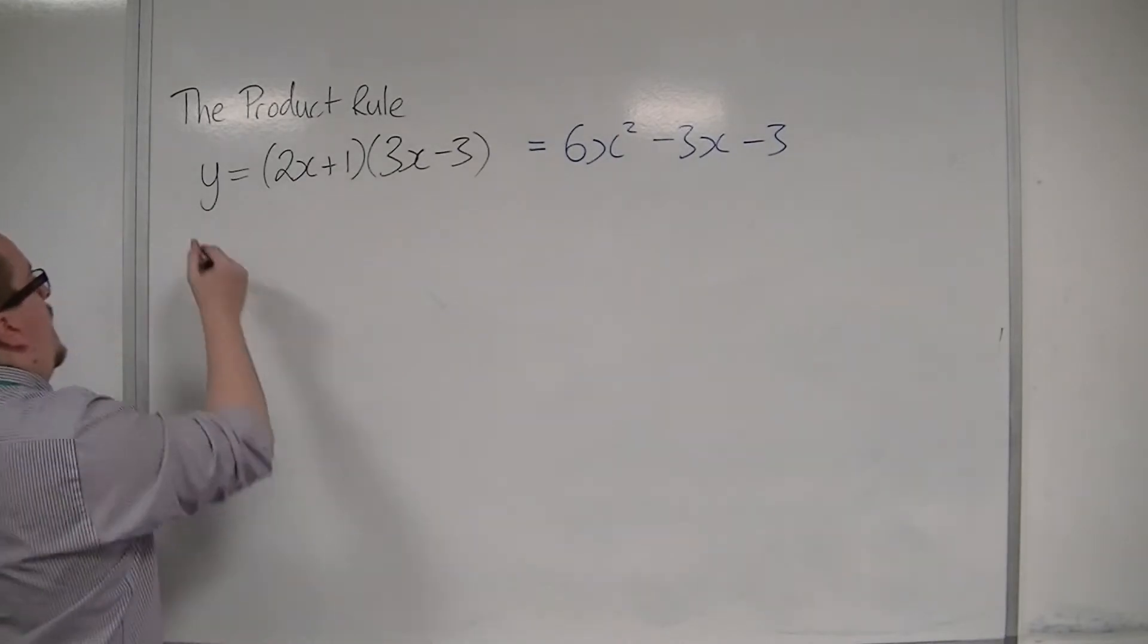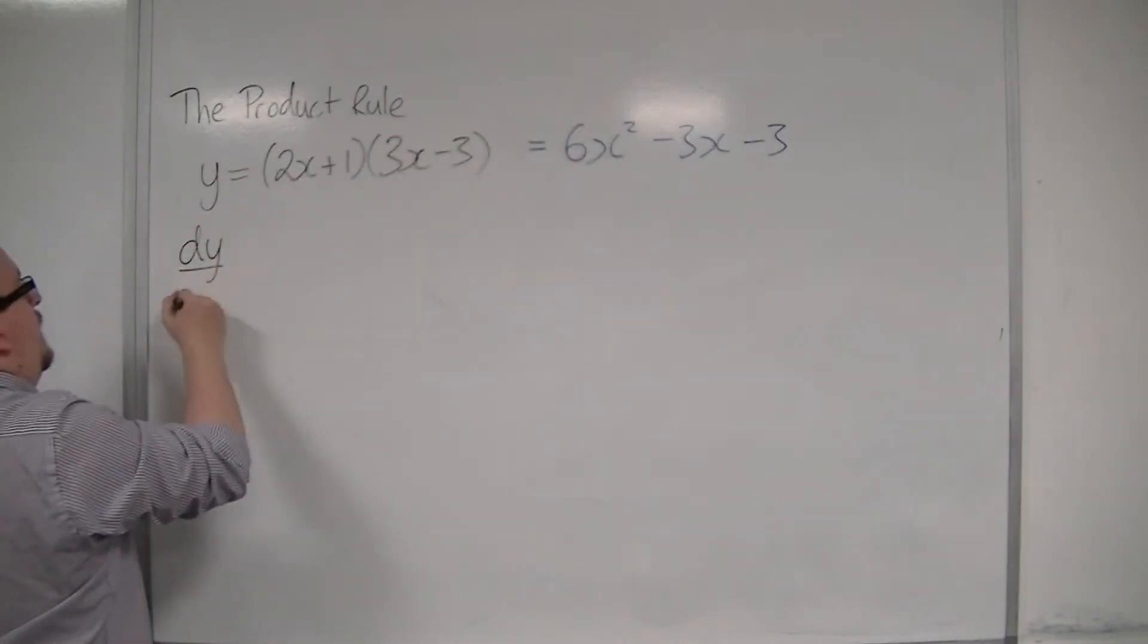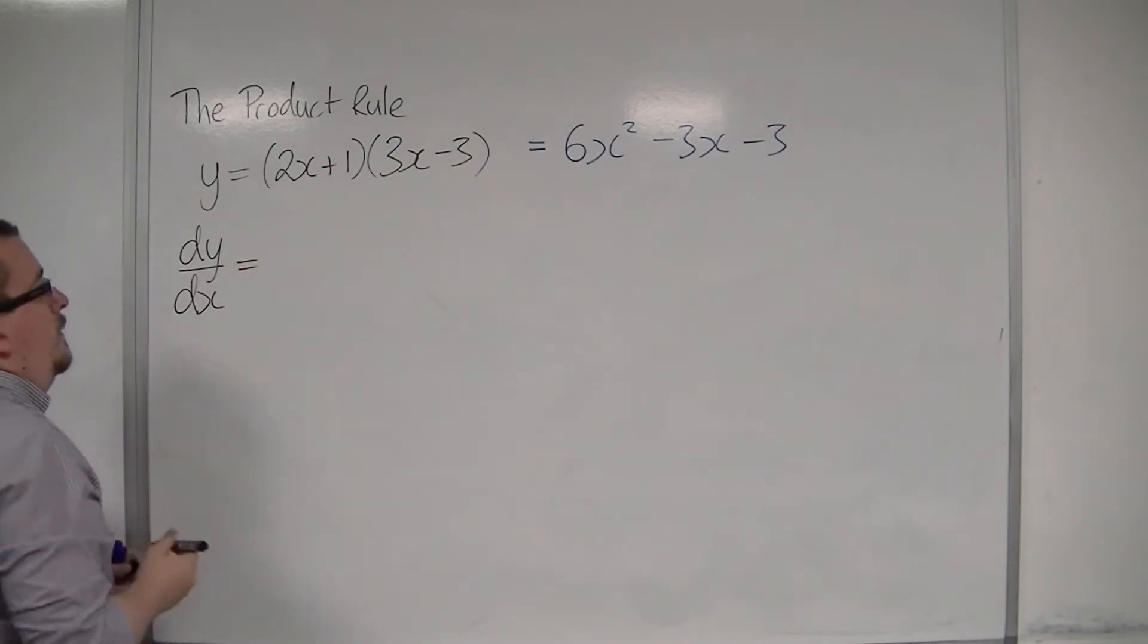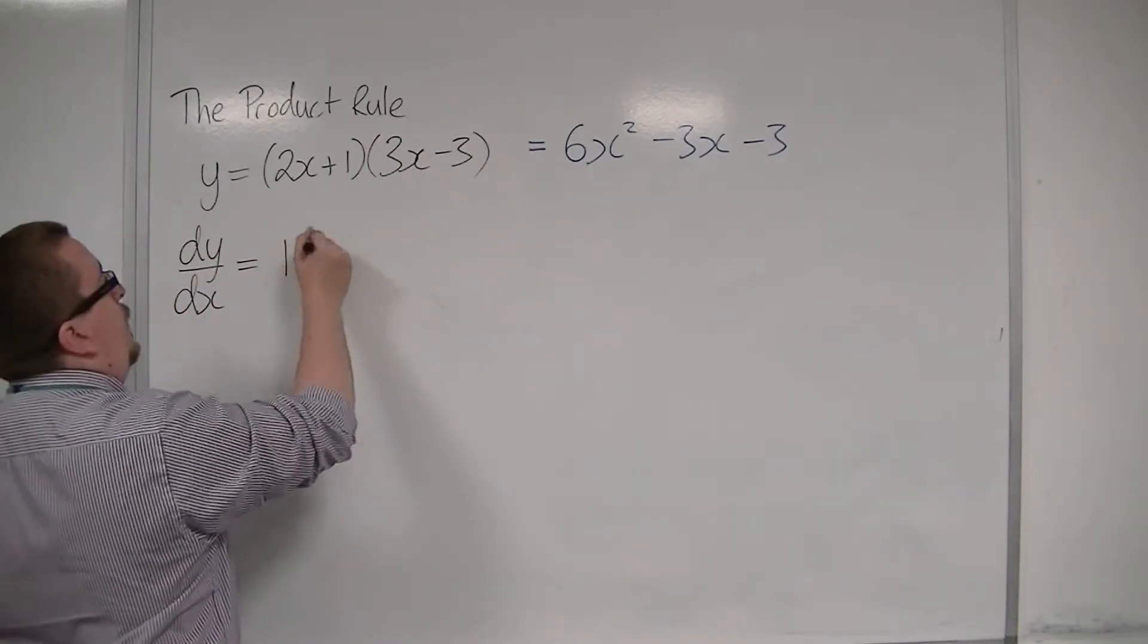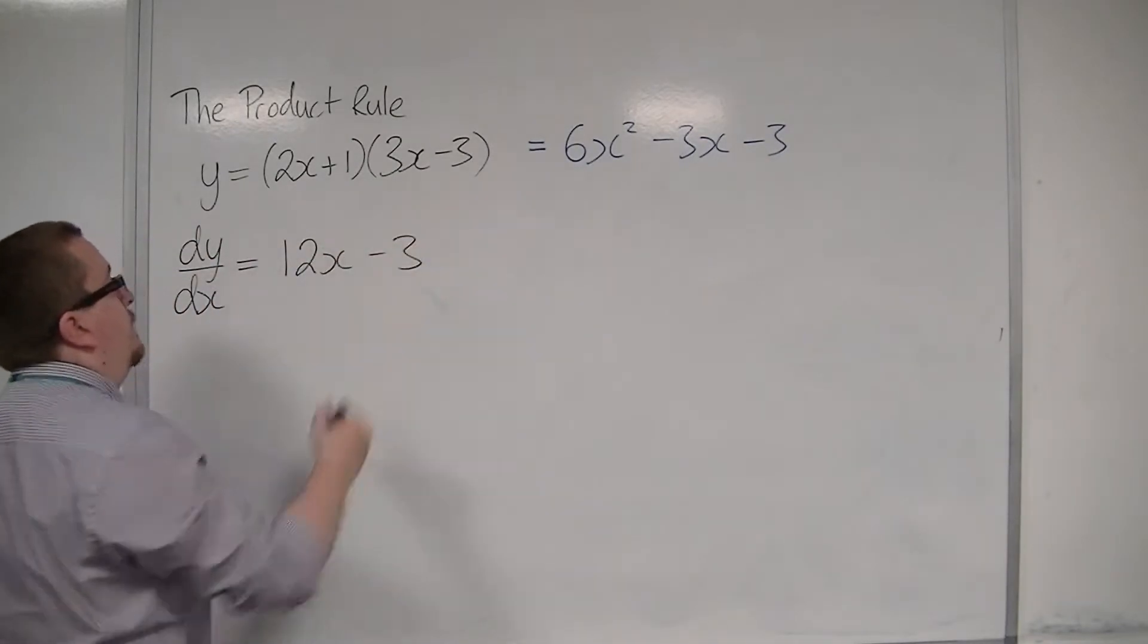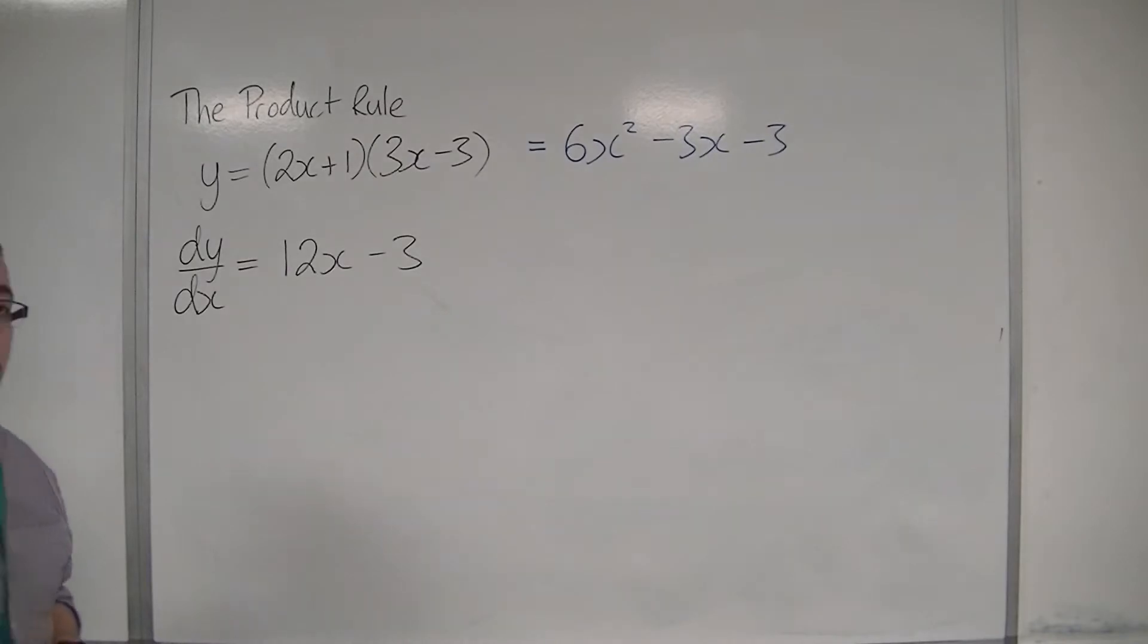So if I would then differentiate this, if I was just going to differentiate it normally, then I would find dy by dx will be 12x minus 3. So you can see that we can differentiate it normally like that. That's perfectly fine.